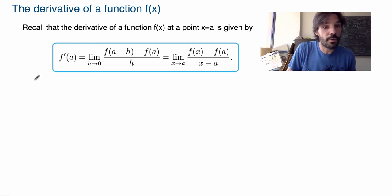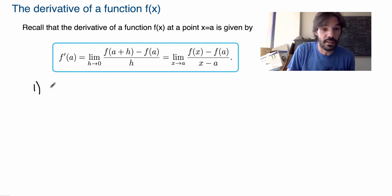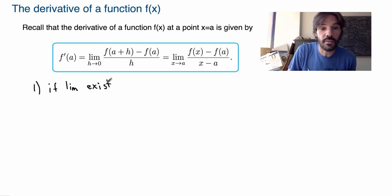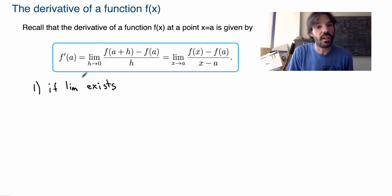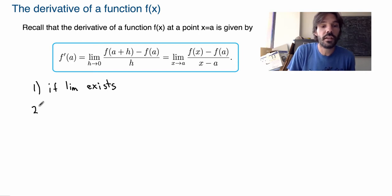There are two important things to note. First, the derivative at a point a is only well defined if the limit exists. This is important because we will see cases where at certain points the limit does not exist, in which case the derivative is not well defined. Second, the derivative has a very nice geometric interpretation.